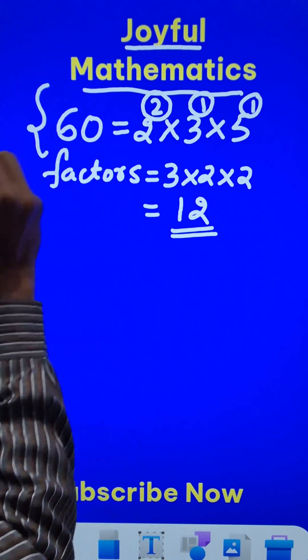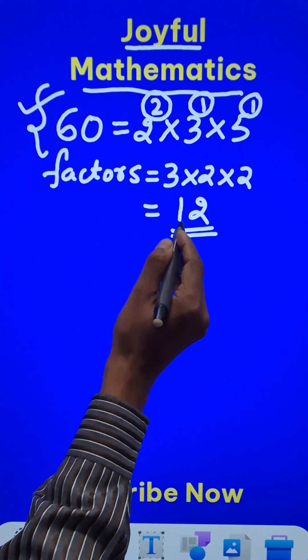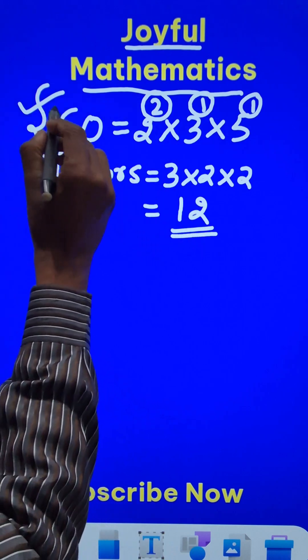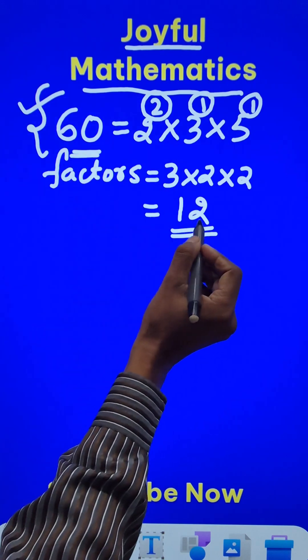And among all the 2 digit numbers, 60 has the greatest number of factors, that means 12 factors. There are some more numbers, that is 2 digit numbers, which have exactly 12 factors.